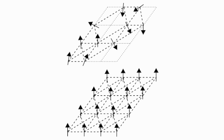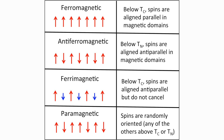We can also make new and weird states of matter using this process, like spin glasses, which, when you briefly apply a magnetic field to them, they become magnetic and then slowly fade to non-magnetic — unlike paramagnetic materials, which instantly lose their magnetism, or ferromagnetic materials, which maintain their magnetism permanently.